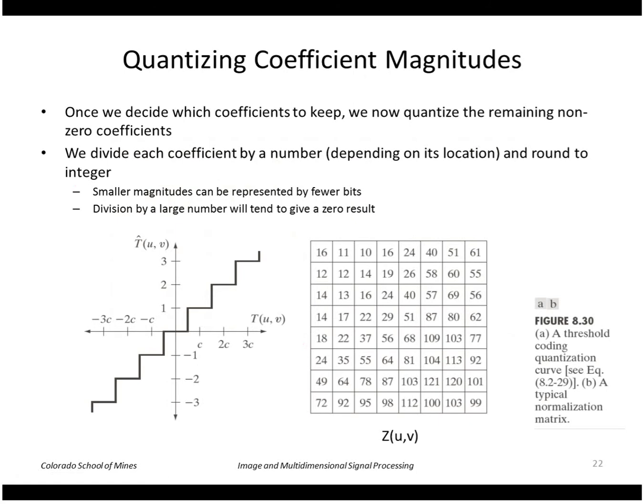Once we have the coefficients that we want to keep, put them in the order that we want, let's quantize them to reduce the number of bits. One way to do that is to divide those coefficients by a constant. This shows a mask of divisors that we're going to apply to all of our coefficients in an eight by eight block. So the upper left coefficient gets divided by 16, this one gets divided by 11, this one gets divided by 10, and so forth. As you can see, the divisors increase as we get down to the lower right here.